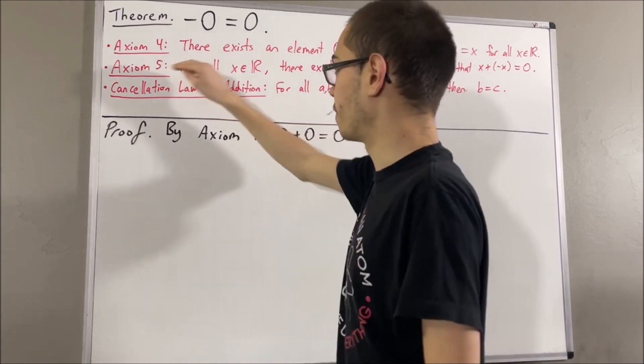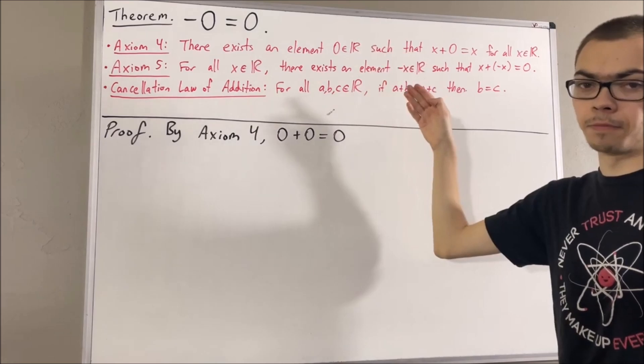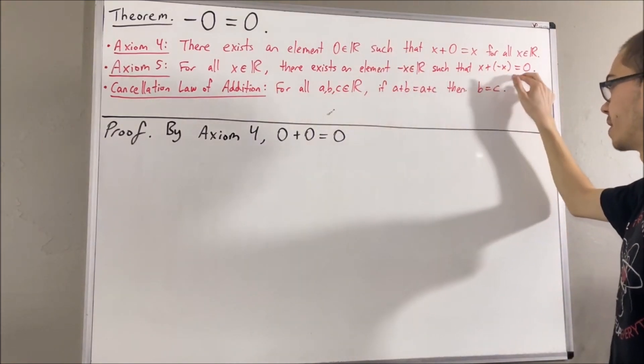And then, by axiom 5, every real number has a negative, so zero has a negative. And we have that zero plus the negative of zero is equal to zero.